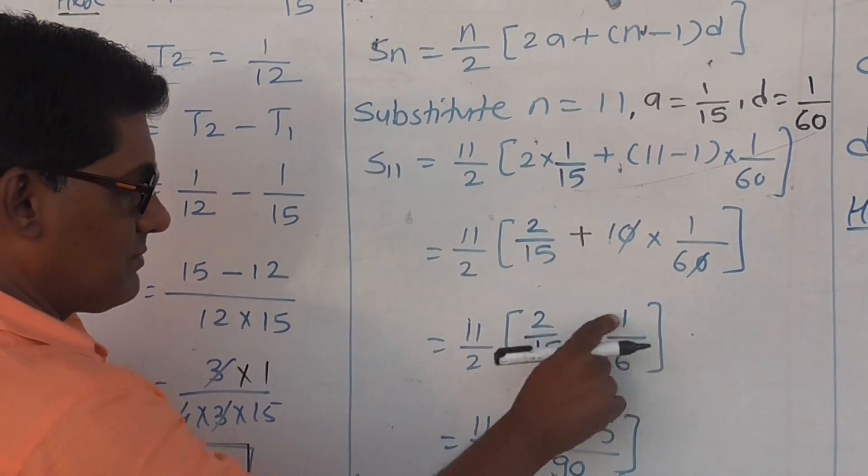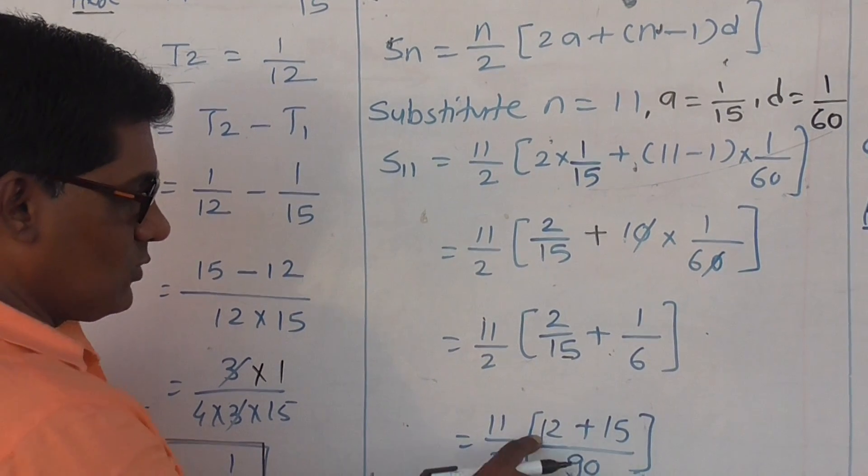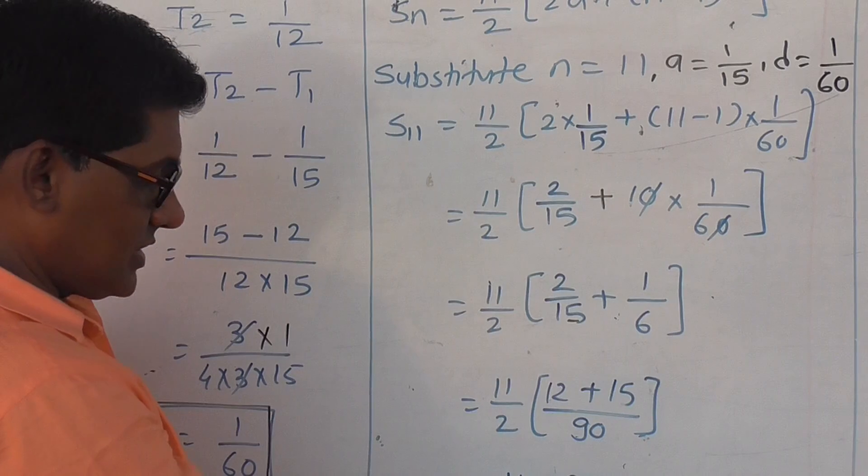Taking LCM for cross multiplication, 2 by 15 plus 1 by 6 equals 12 plus 15 over 90, which is 27 by 90. Then 11 by 2 times 27 by 90.